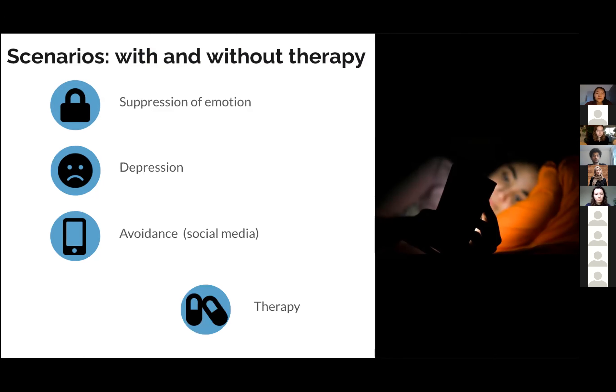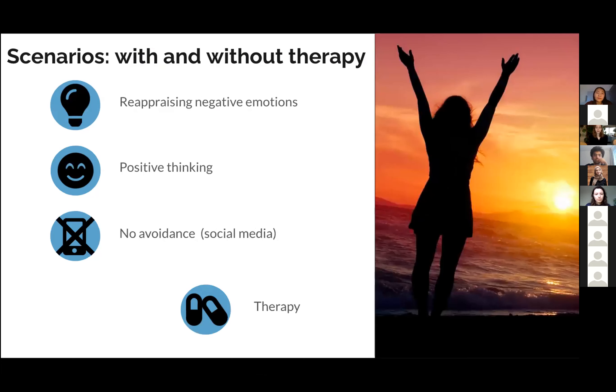We investigate first this person in a situation without therapy. And second, we will investigate this person in a situation with therapy. Ultimately, this therapy will help this person to learn how to reappraise negative emotions. So to start, rethink again and get out of the negative cycle this person is in. Eventually, it can result in a more positive thinking, a more positive belief state where this person doesn't need any avoidance anymore, doesn't need to go to social media anymore, and feels better or well, and has a more healthy emotion regulation.